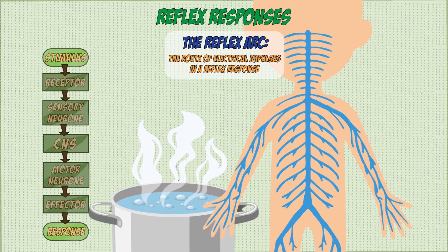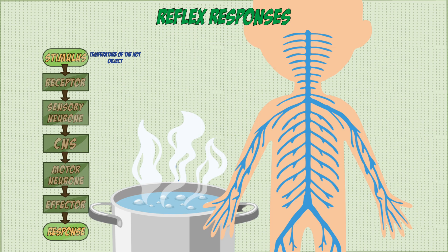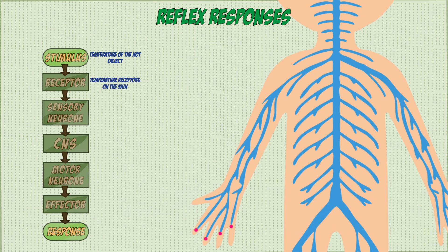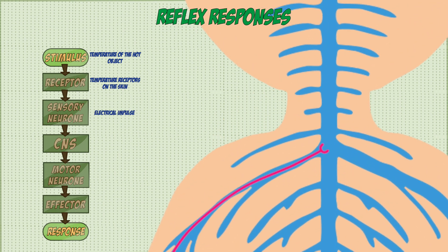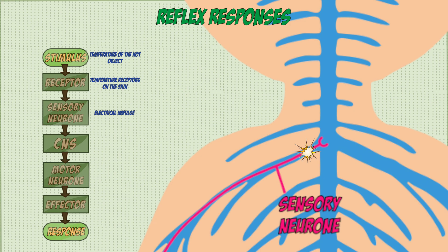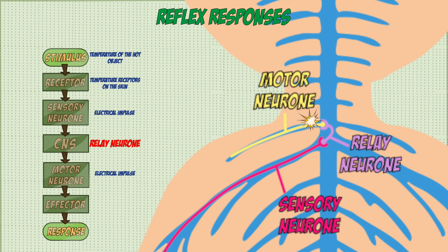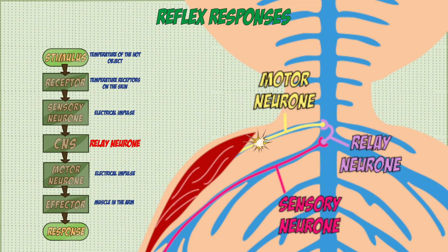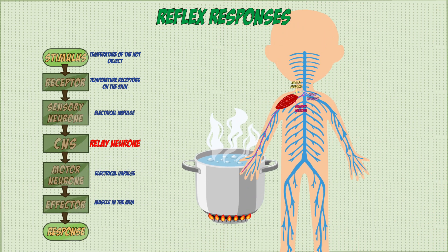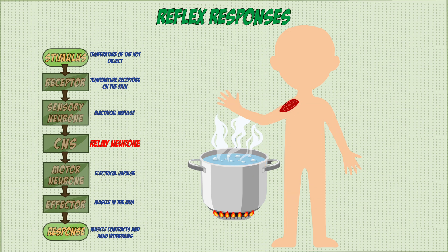In the reflex arc example of touching a hot object, the stimulus is the temperature of the hot object and the receptors are the temperature receptors in the skin. These send an electrical impulse through the sensory neuron, and when they reach the CNS, instead of going up to the brain, they travel through a relay neuron found in the spinal cord. The relay neuron acts as a coordinator and directly sends an impulse back via the motor neuron to the muscles in the arm, which contract to move the hand away from the hot object.